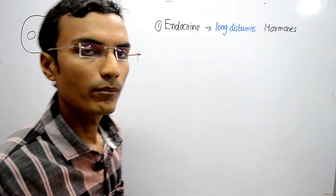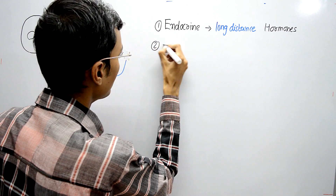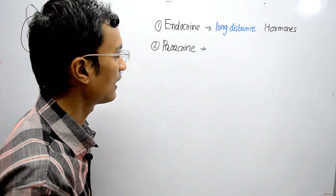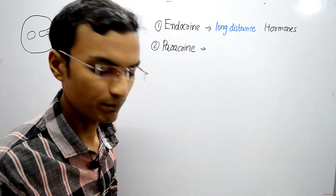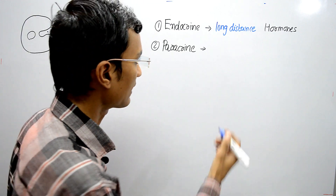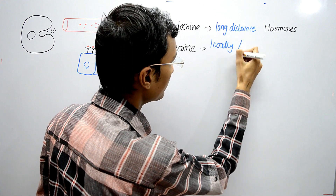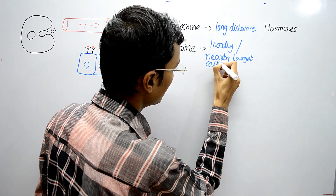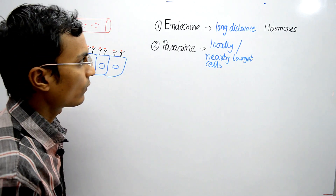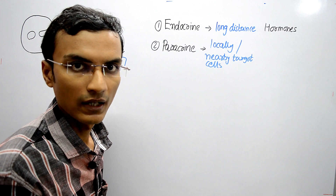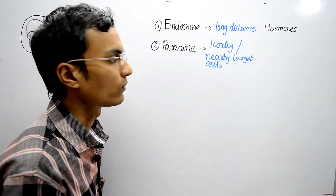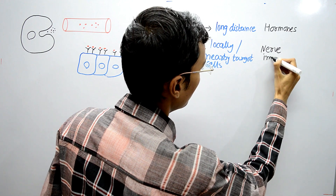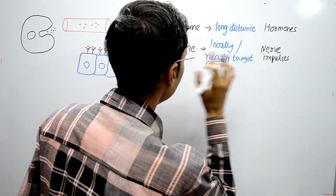The second type is paracrine signaling. In this signaling type, the signaling molecules released into extracellular space act locally on nearby target cells. An example of paracrine signaling is the transmission of a nerve impulse between a synapse — that is, from one nerve cell to another nerve cell.